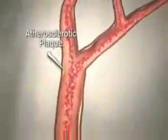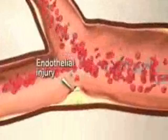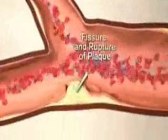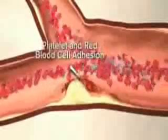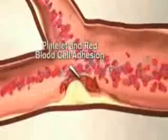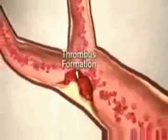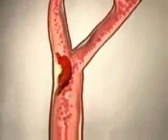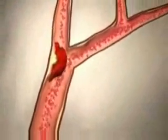The plaque can rupture, promoting thrombus formation by activating the coagulation cascade. Platelets and red blood cells aggregate at the site of injury, causing further narrowing of the artery. This impedes blood flow even more and causes turbulence in the artery. It also increases the likelihood of thrombus formation.